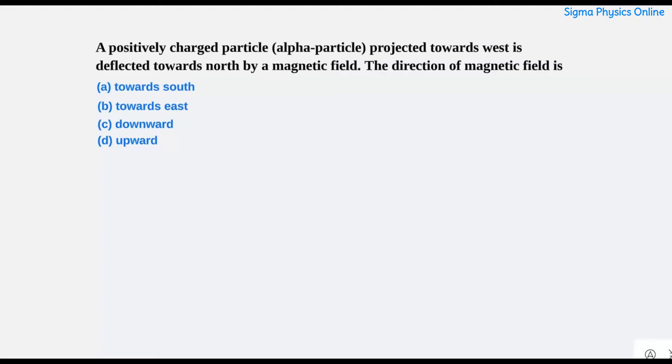The direction of the magnetic field is towards south, east, downwards, or upwards. There are four options given and we'll have to choose the correct option. So let's start.